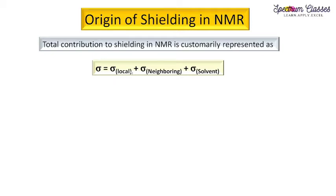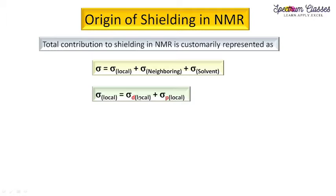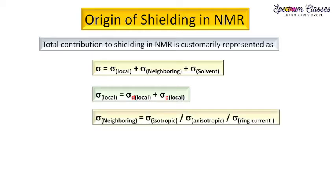Sigma is the contribution of three terms: sigma local, sigma neighboring, and sigma solvent. We are going to discuss each of these terms separately. Sigma local is represented as sigma d local plus sigma p local. Sigma neighboring is determined as sigma isotropic, sigma anisotropic, or sigma ring current, or a combination. The last term is sigma solvent.